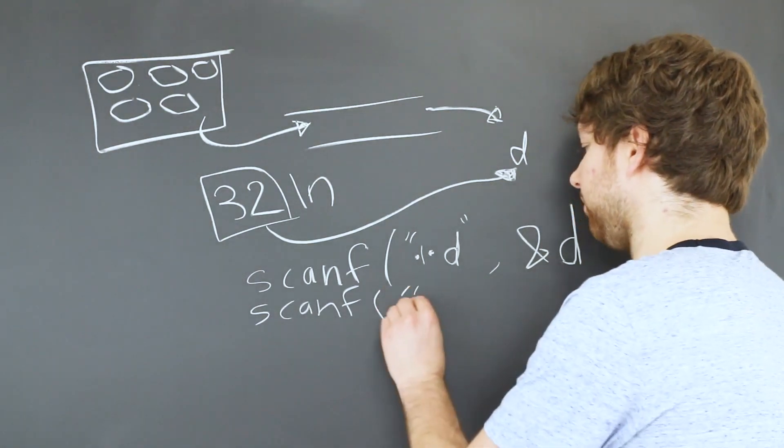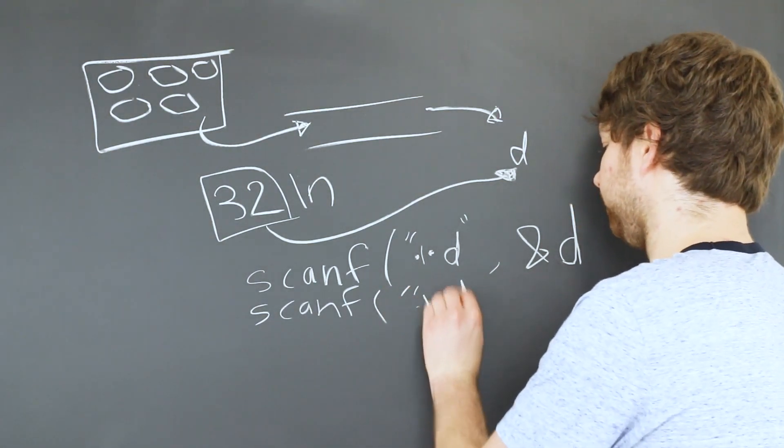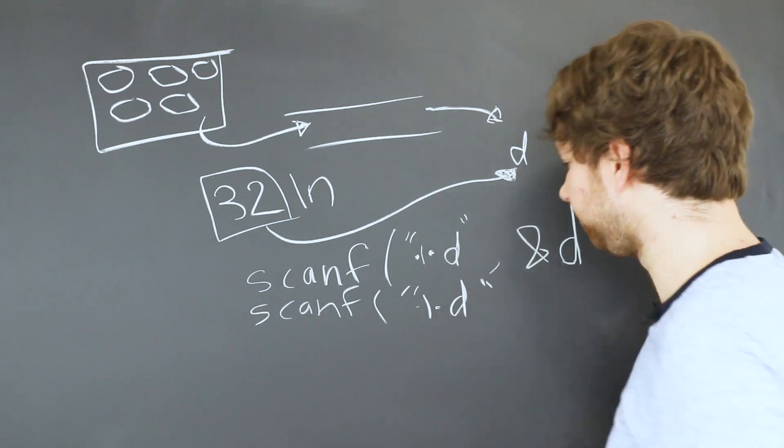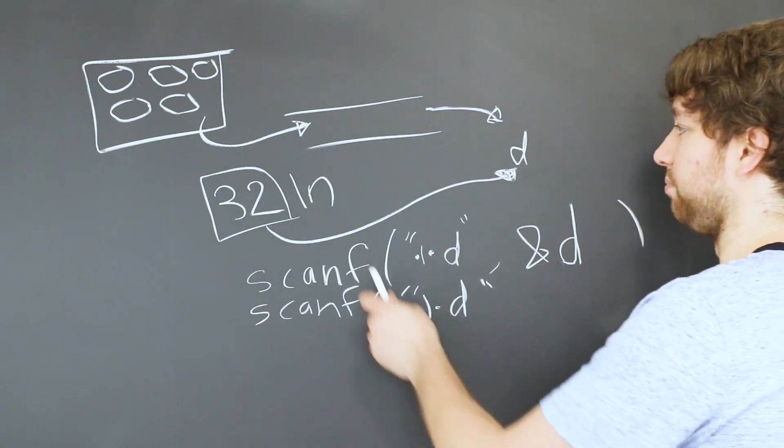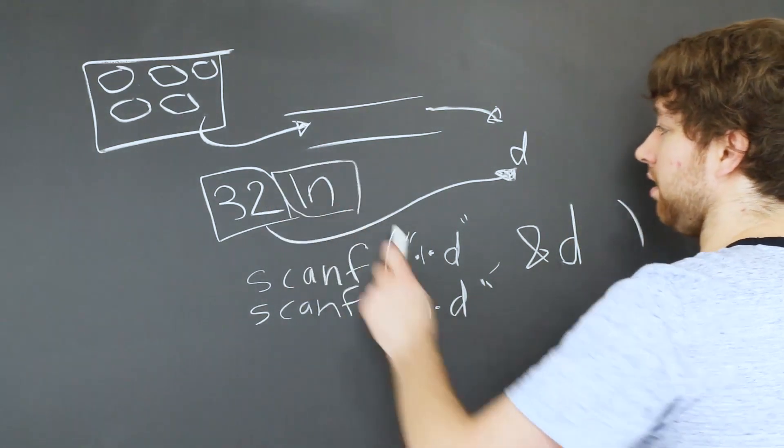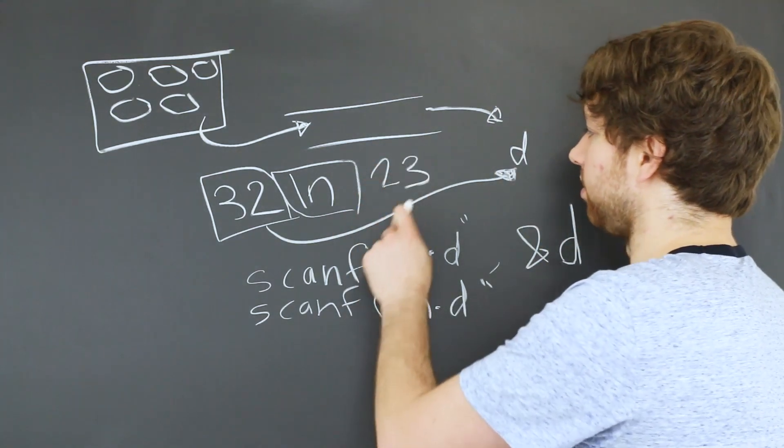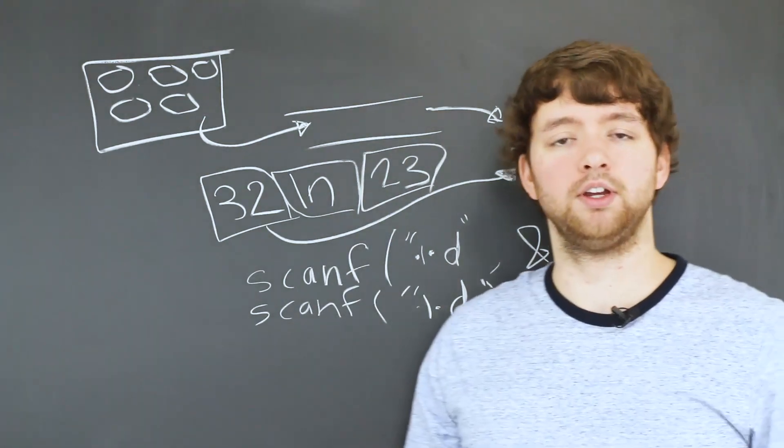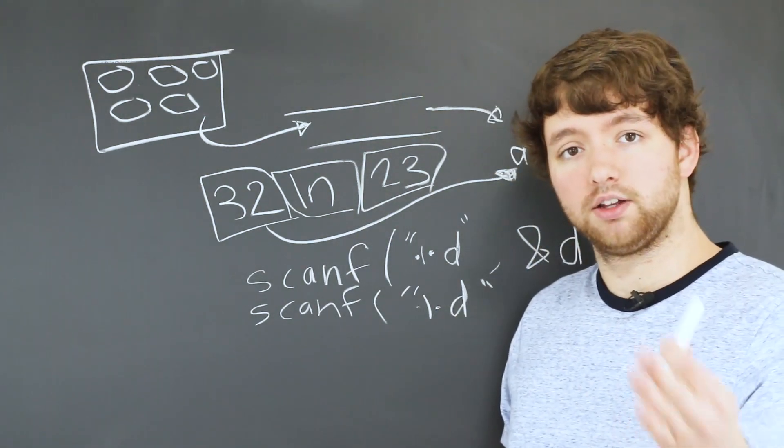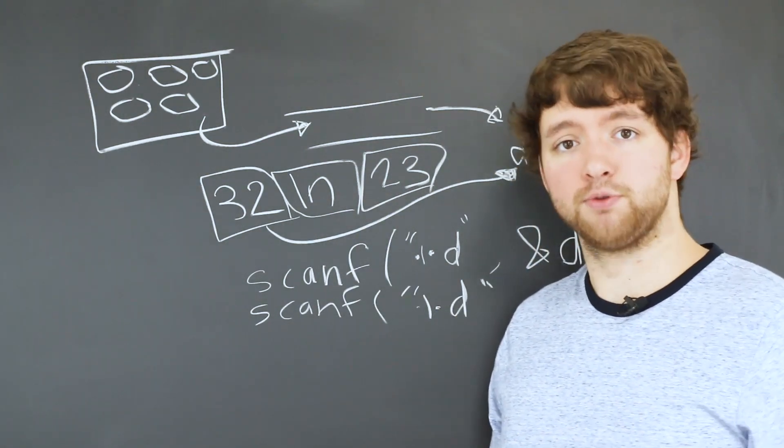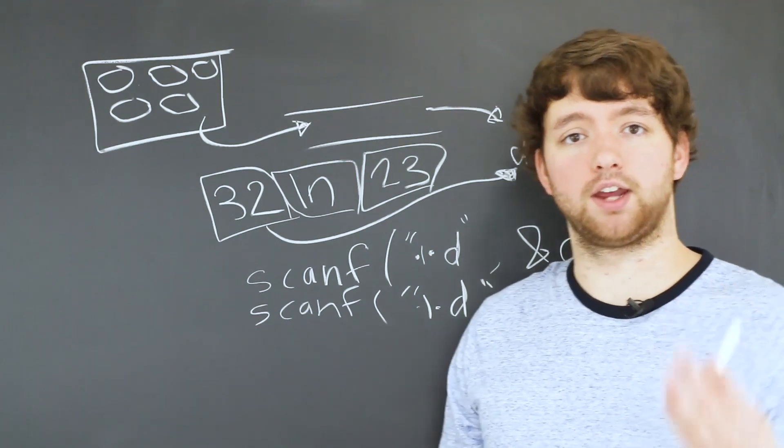So for example, if we asked for another integer data, it's going to look at the input stream, see this newline, and it's going to ignore it. And then it's going to ask the user for more input. So we could say 23 the next time. Well, it works fine in that scenario, which is great. But what if we asked for a character? So instead of a number, we asked for a character.